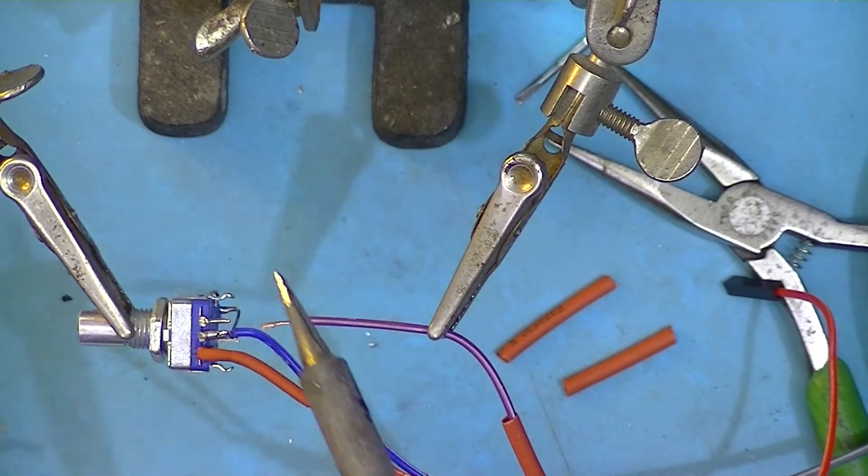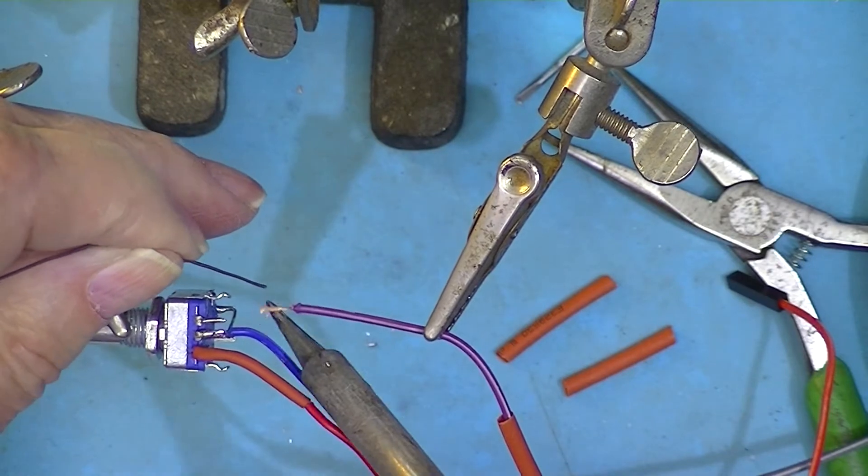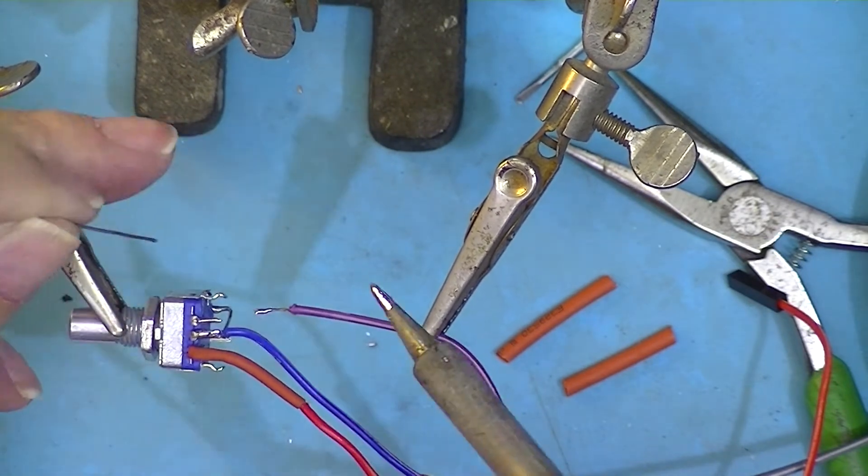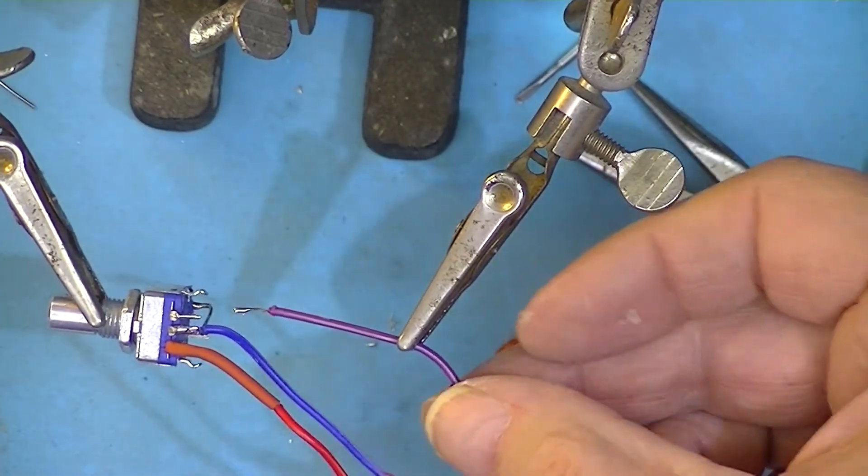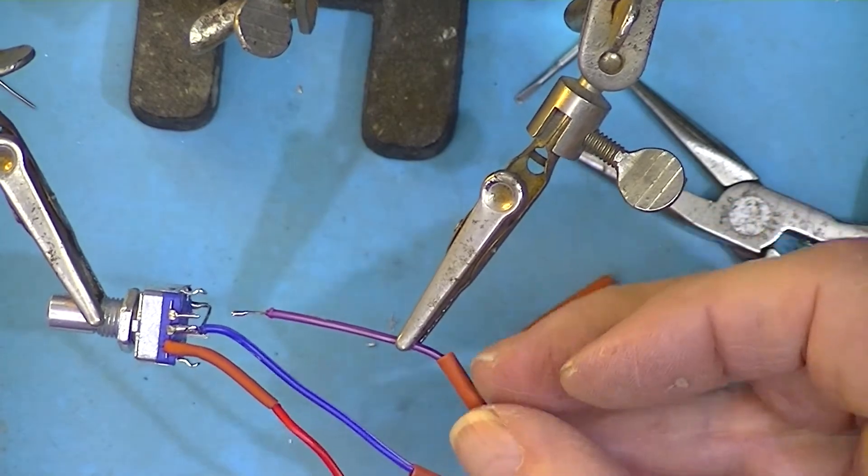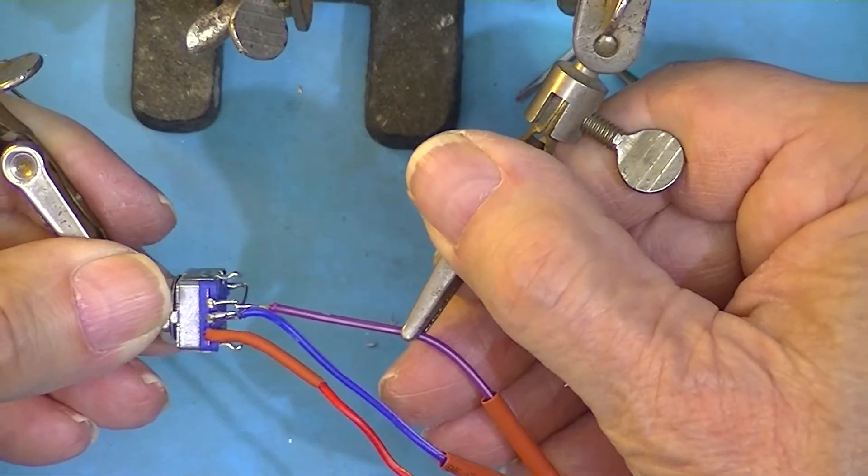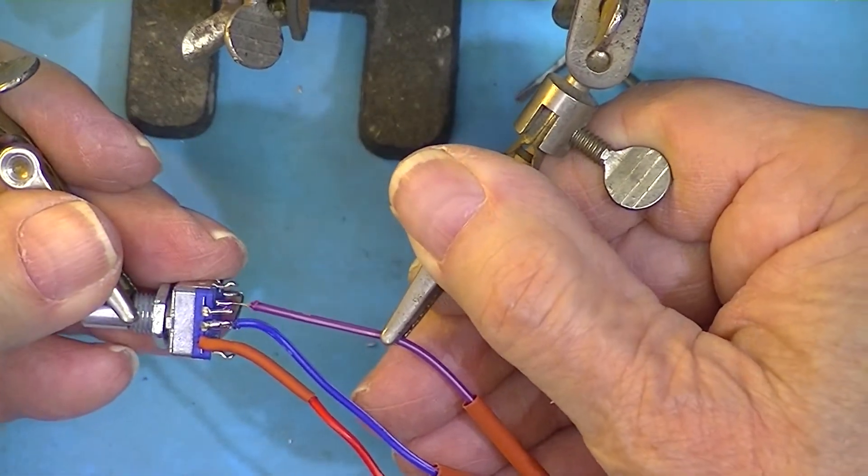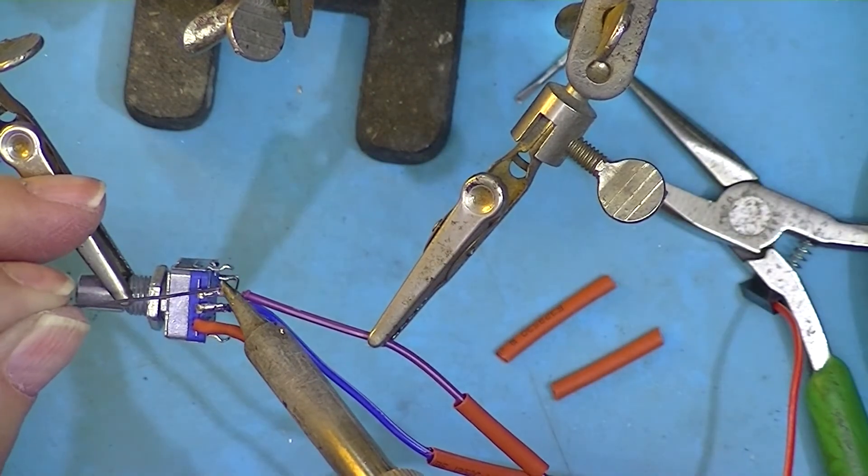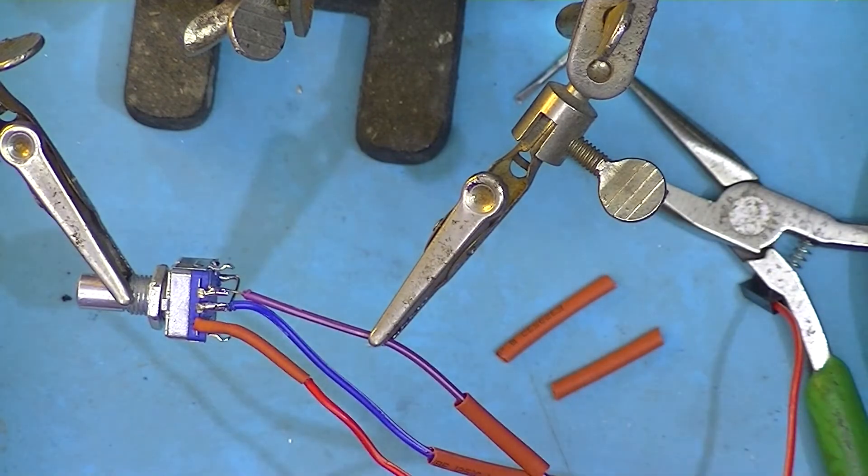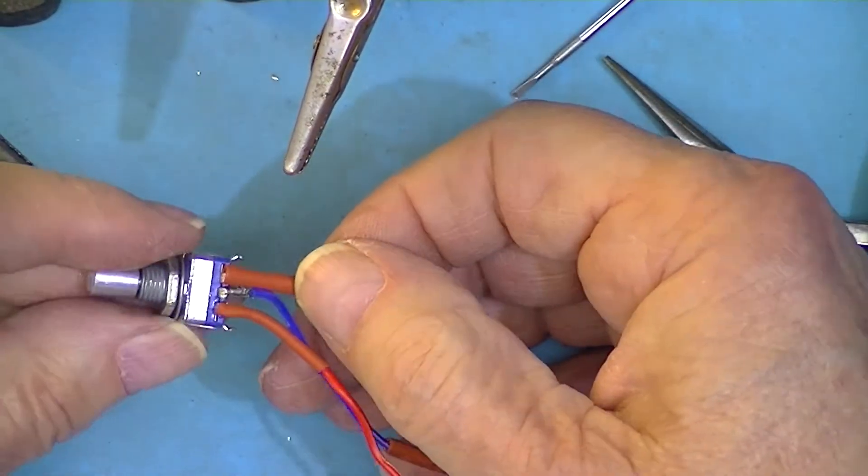Tin the wire and the lug. I've already put a piece of heat shrink tubing on. Using our little tool here, we'll just get all these things friendly and get the heat shrink to go over that terminal.